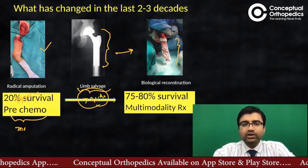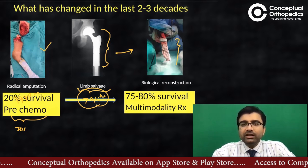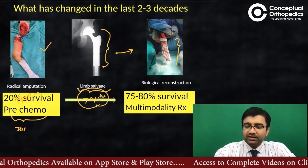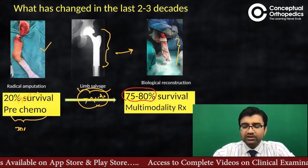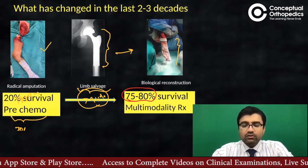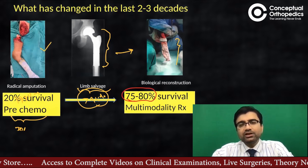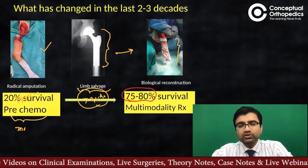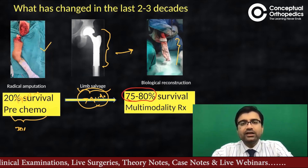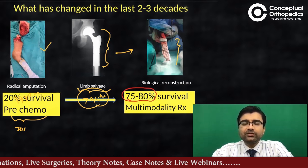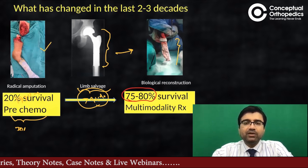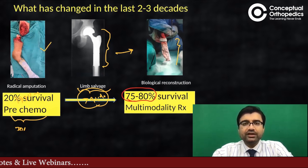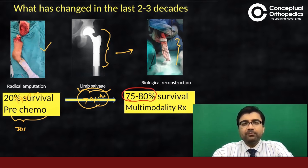Now, with multimodality treatment which includes chemotherapy, survival is in the range of 75 to 80%. A basic question is: if we do limb salvage versus amputation, do recurrence rates and survival change? Is there a higher risk with tumor prostheses? Logically, limb salvage margins are closer, but it has been shown that there is no difference in survival rates between amputation and limb salvage surgery. In fact, limb salvage surgery provides a better quality of life.